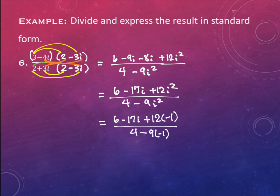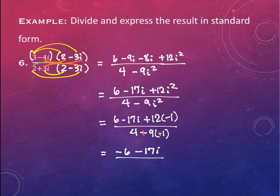It'll change my signs. So this bottom will end up being positive. This piece on top will be a negative. So I'm going to have 6 at the beginning and negative 12 at the end, which gives me negative 6, and minus my 17i. And on the bottom, I have a 4 and a 9 for my 13.